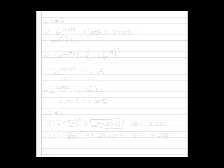So first, we're going to look at problem 14 from 6.3, and we have a continuous rate of 2.75%, and part A asks us to find the APY of the account.